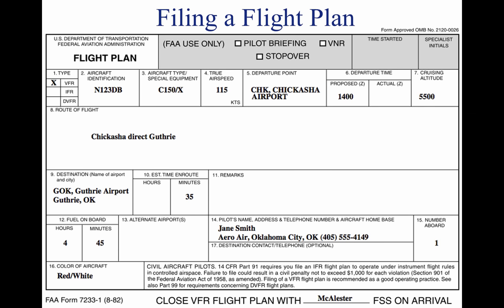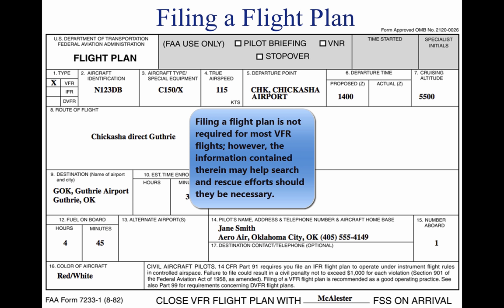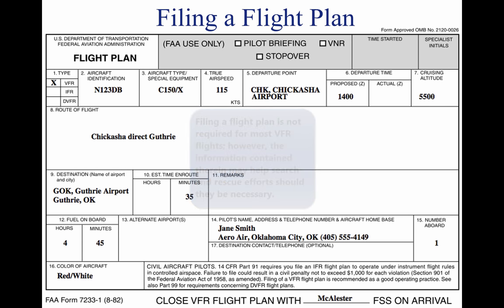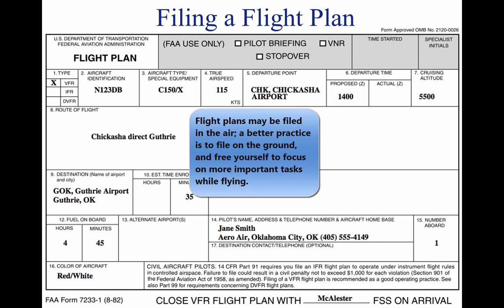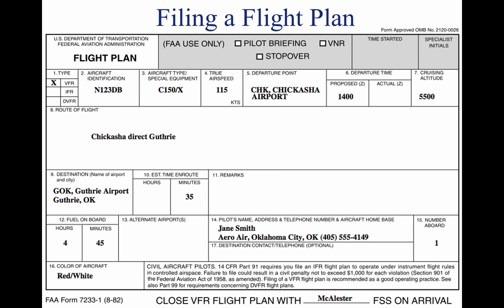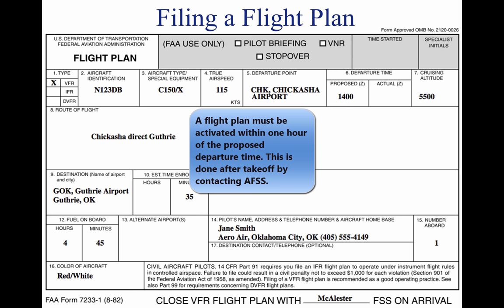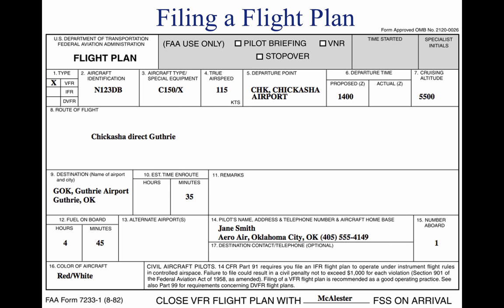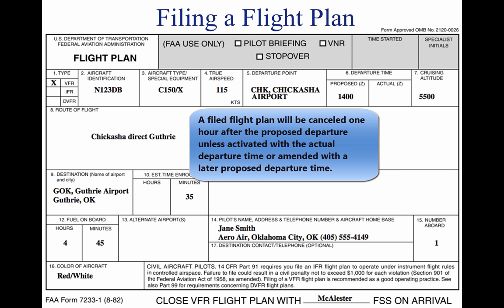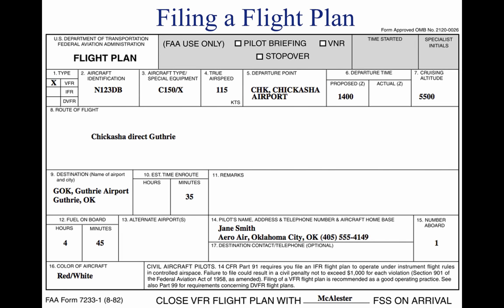Filing a VFR Flight Plan. Filing a flight plan is not required by regulations. However, it is a good operating practice, since the information contained in the flight plan can be used in search and rescue in the event of an emergency. Flight plans can be filed in the air by radio, but it is best to file a flight plan by phone just before departing. After takeoff, contact the AFSS by radio and give them the takeoff time so the flight plan can be activated. When a VFR Flight Plan is filed, it is held by the AFSS until one hour after the proposed departure time, and then cancelled unless the actual departure time is received, a revised proposed departure time is received, or the AFSS is informed at the time of filing that the proposed departure time is met but actual time cannot be given because of inadequate communication. The FSS specialist who accepts the flight plan does not inform the pilot of this procedure.